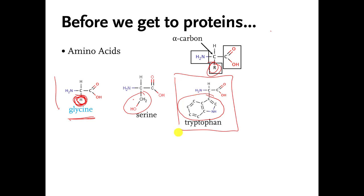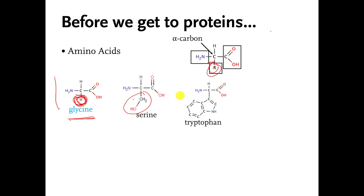You can have really complicated stuff too. This is an amino acid molecule called tryptophan, and all of this stuff here is taking the place of R, so that's a relatively complicated amino acid molecule. This is the stuff that some people say makes you sleepy when you eat too much of it at Thanksgiving — I don't know if that's really true.